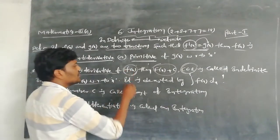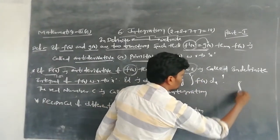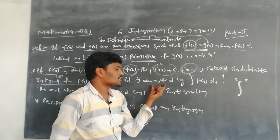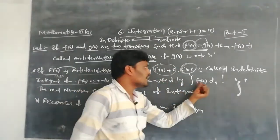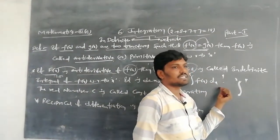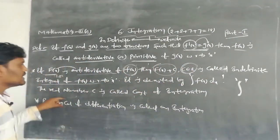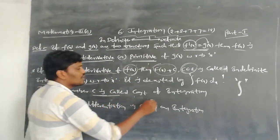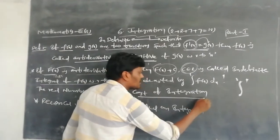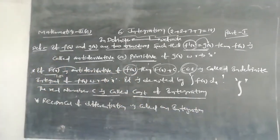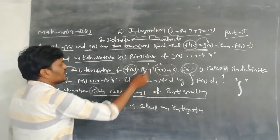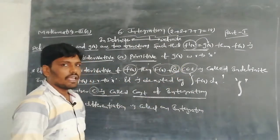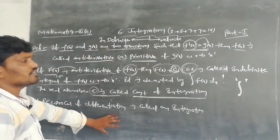Here, integration is denoted with the integral symbol. The integration of f(x) is denoted as ∫f(x) dx. Here, c is a real number, and c is called the integration constant or constant of integration. This is the definition of integration.